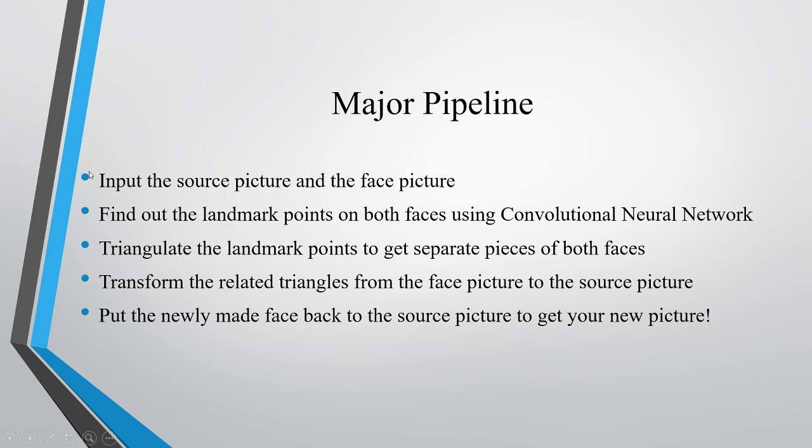This is the major pipeline of our project. First, we import the source picture and the face picture into the program. The program finds out the landmark points on both faces using convolutional neural networks. Then after finding the landmark points, it triangulates the landmark points to get separate pieces of both faces, which means it slices faces into pieces. Then it transforms the related triangles from one face to the other, so the face picture is mapped onto the source picture. Finally, we put the newly made face back onto the source picture and we get our new stickers.